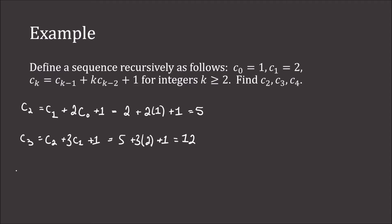Then we have c4, which is c sub 3 plus 4 times c sub 2 plus 1 — that is 12 plus 4 times 5 plus 1, which gives us 33. And of course we could keep going, finding c5, c6, and so forth.